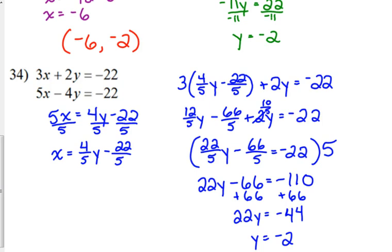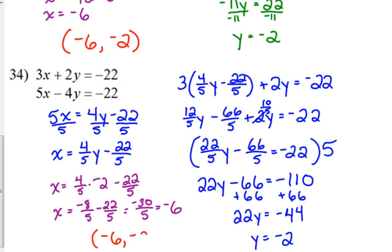Plug it back in to this one over here. That is negative 8 fifths minus 22 over 5. That's negative 30 over 5, which is negative 6. So my answer is negative 6, negative 2. Interesting.